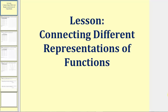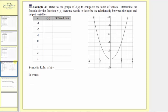Welcome to part four of the lesson on connecting different representations of functions. In example four, we're asked to refer to the graph of k of n shown here to complete the table of values, determine the formula for k of n, and then use words to describe the relationship between the input and output variables.